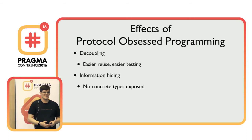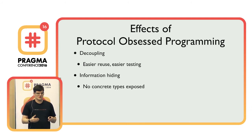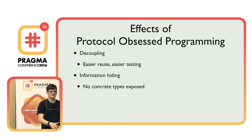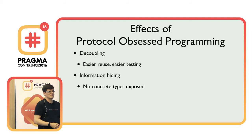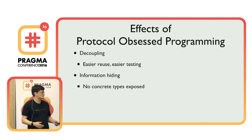Next, we have information hiding — we don't expose how we implement something, which means we can change it afterwards. It's like the Las Vegas thing: what happens behind the protocol stays behind the protocol. I always think about the word 'concrete' — concrete is what you build houses on. In the beginning it's very malleable and soft, but then it gets harder and harder to change. If we expose a concrete type, chances are we can never get rid of it, whereas with a protocol in between, we can change things behind the scenes.